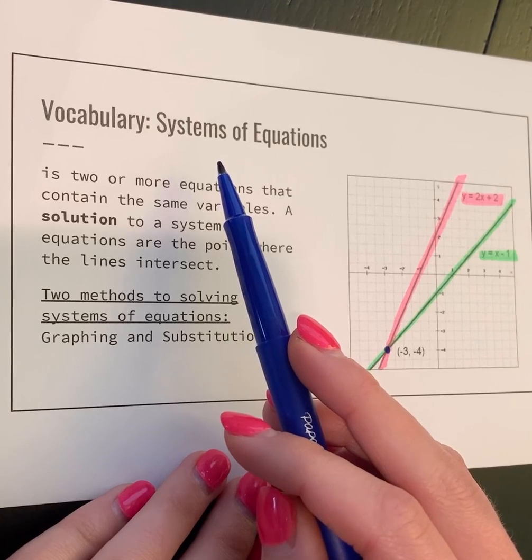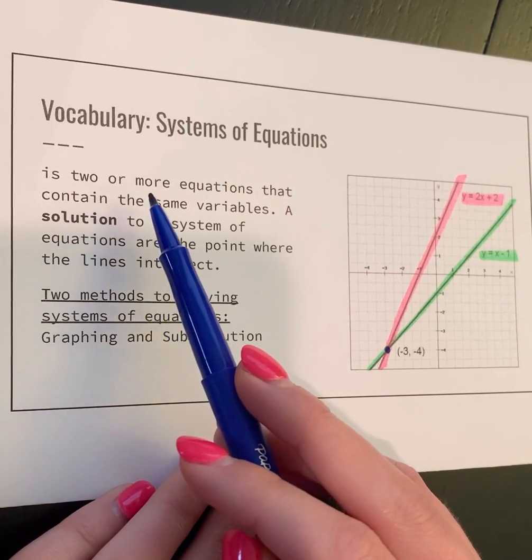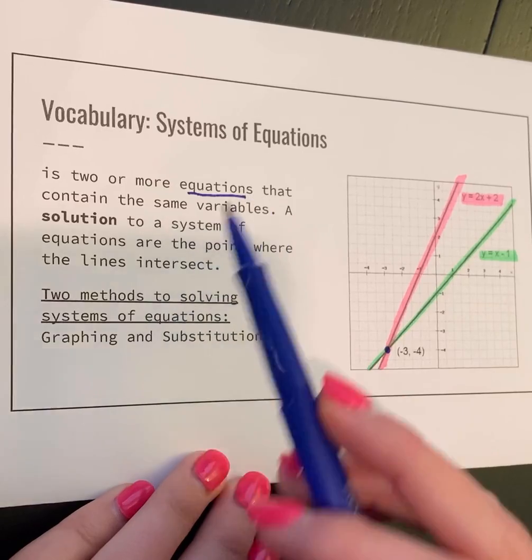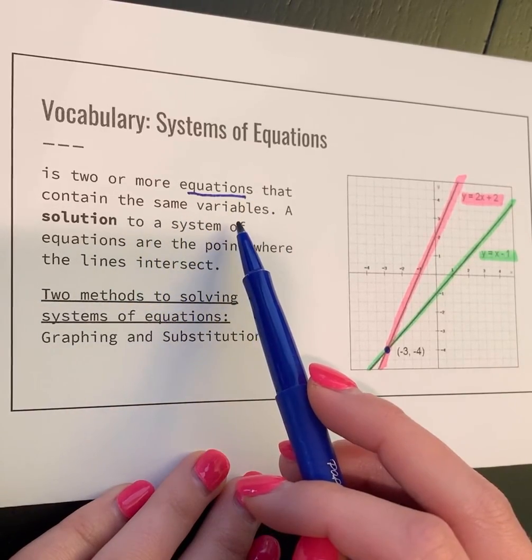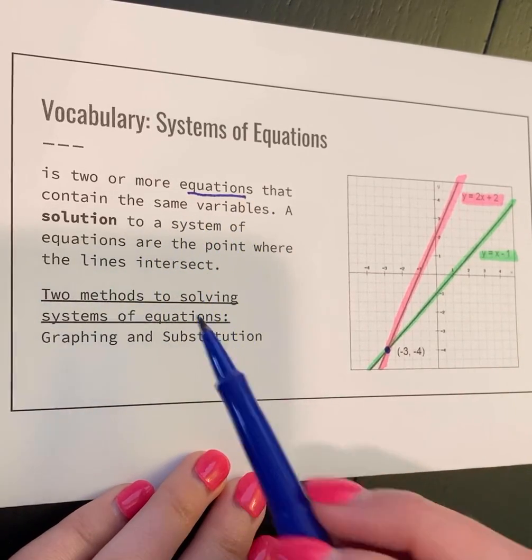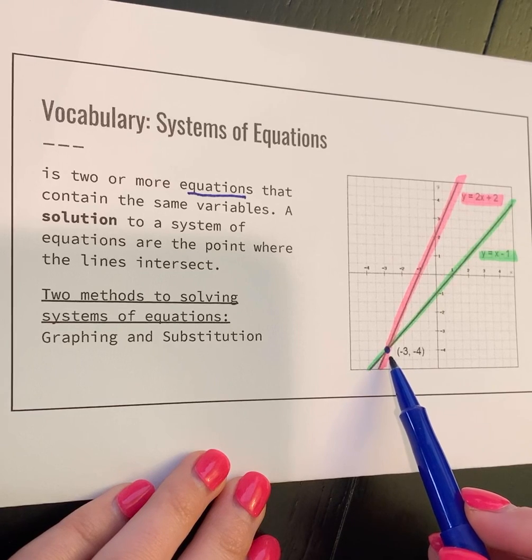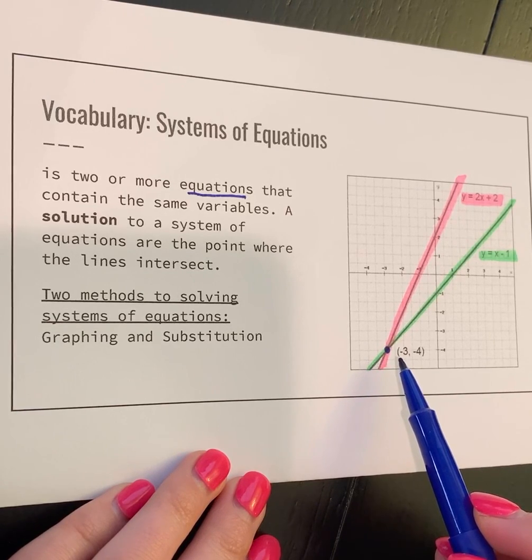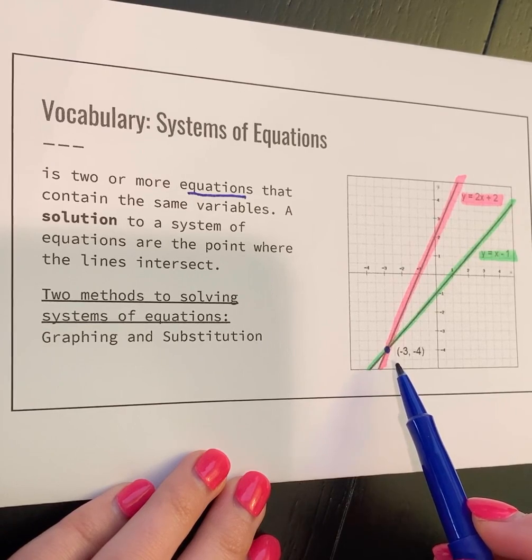The basic definition for systems of equations: anytime you have two or more equations that contain the same variables. There also could be a solution to those systems, and that's the point where the lines intersect.